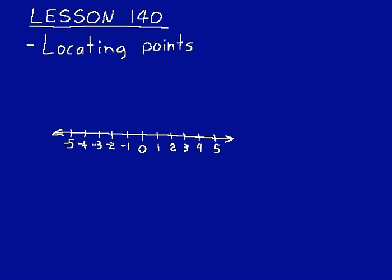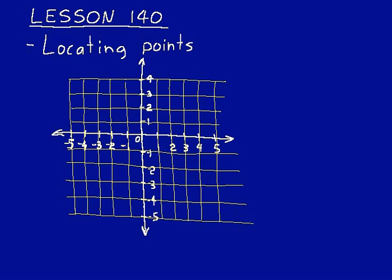So here's a horizontal number line and we'll put the vertical number line right through zero on that horizontal number line. Okay, so now we have a vertical and a horizontal number line that intersect at zero. And then I put a graph paper type grid on there too to help us find and locate our points.